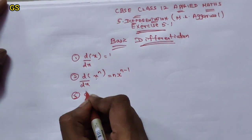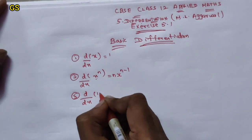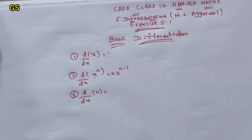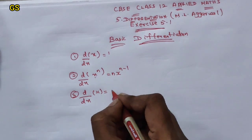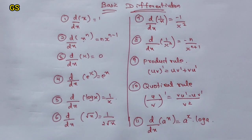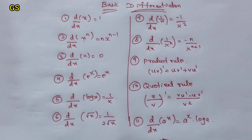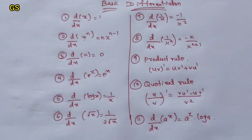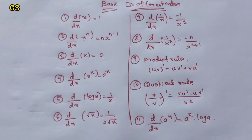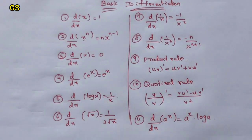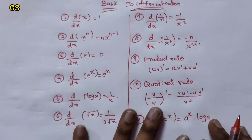Next, the third formula. I will write the formula now. The formula is about x — for example, log x and e power x. The formula for d/dx of log x is 1 by x, and d/dx of e power x is e power x.